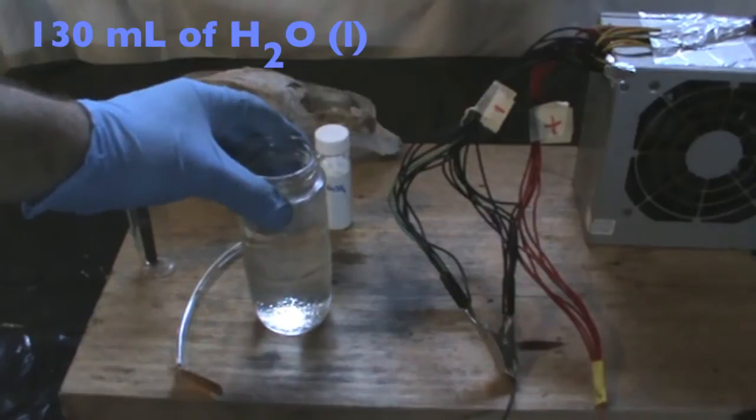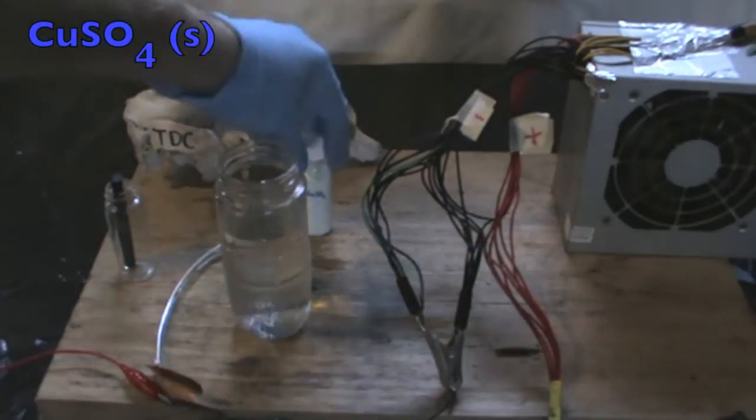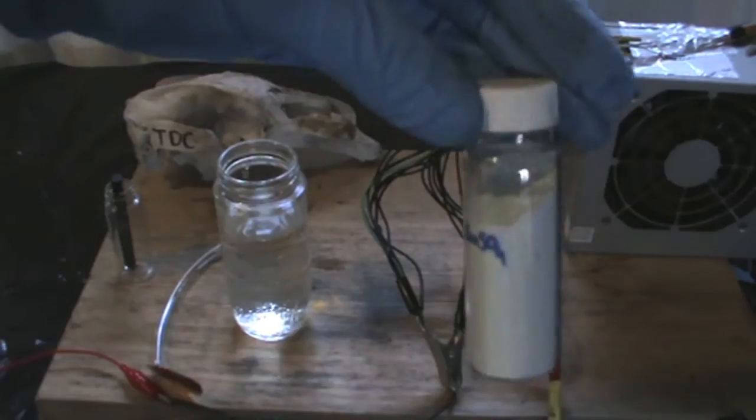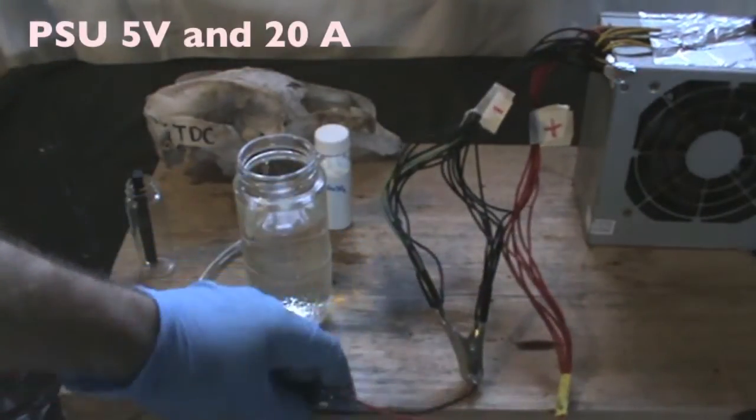Pour water into a suitable container. Then get some copper sulfate and finally a power source that delivers 5 volts and 20 amps.